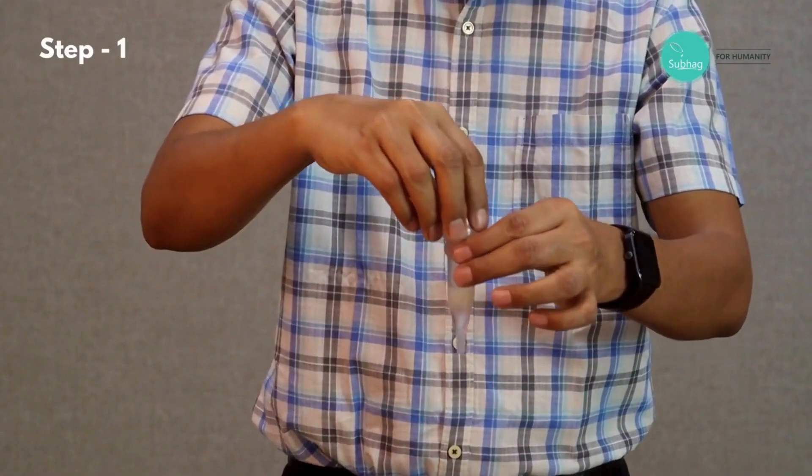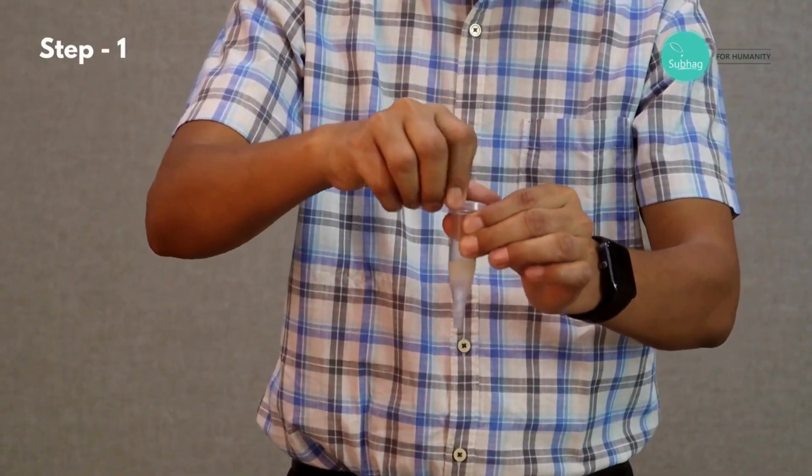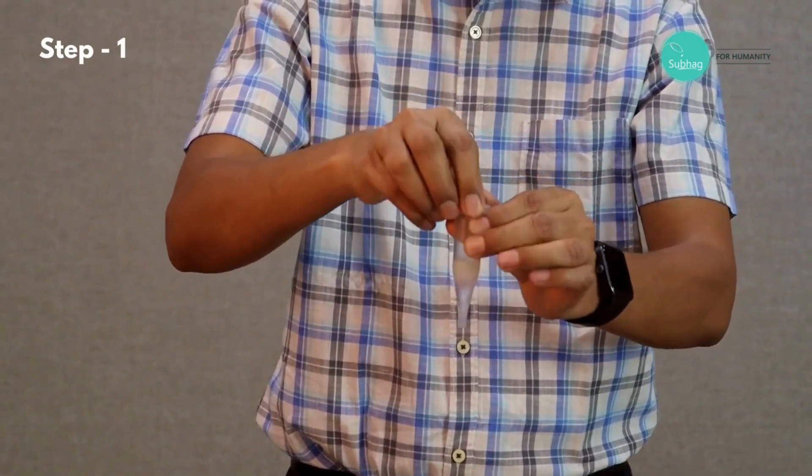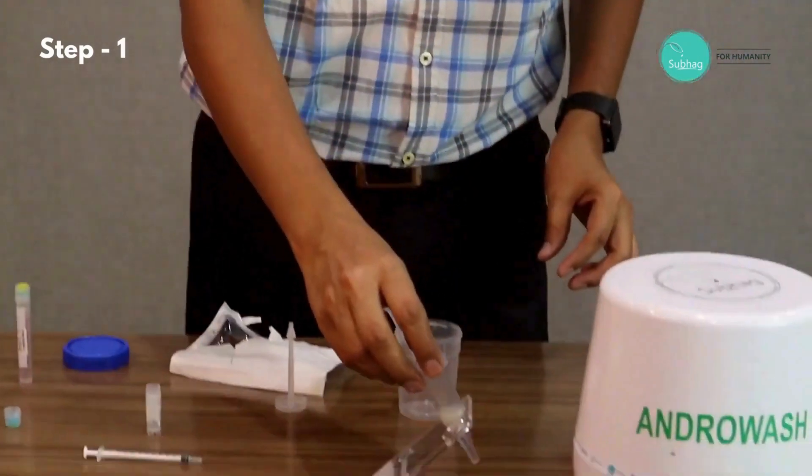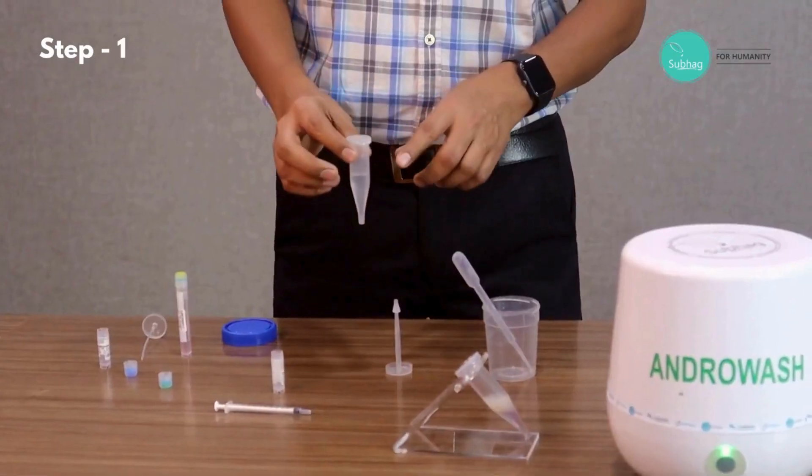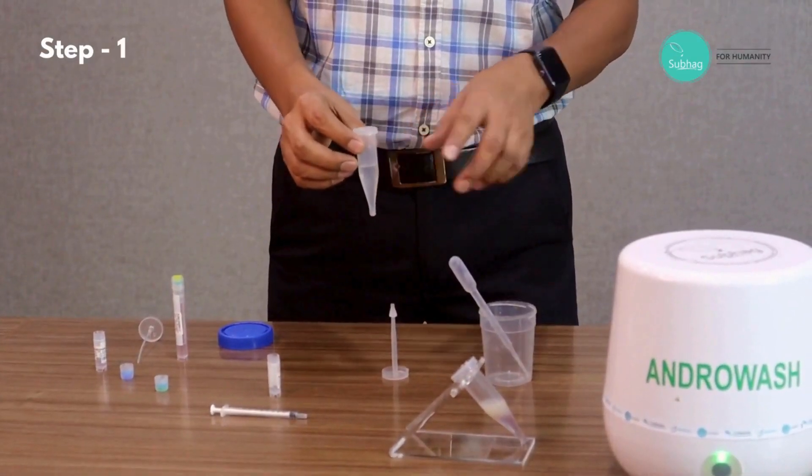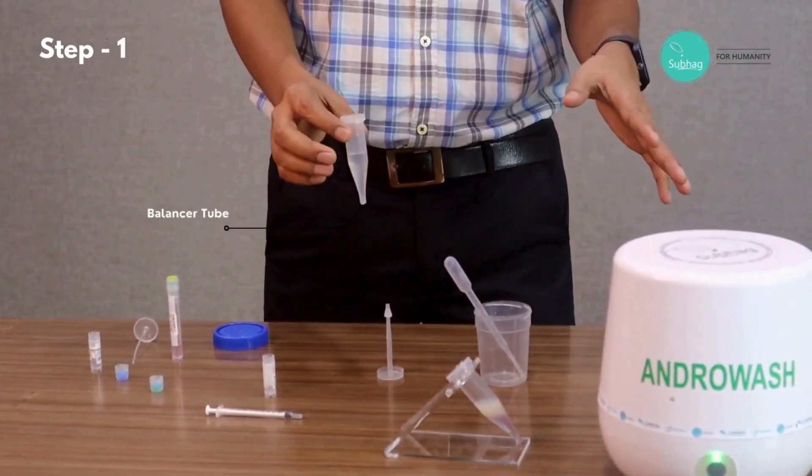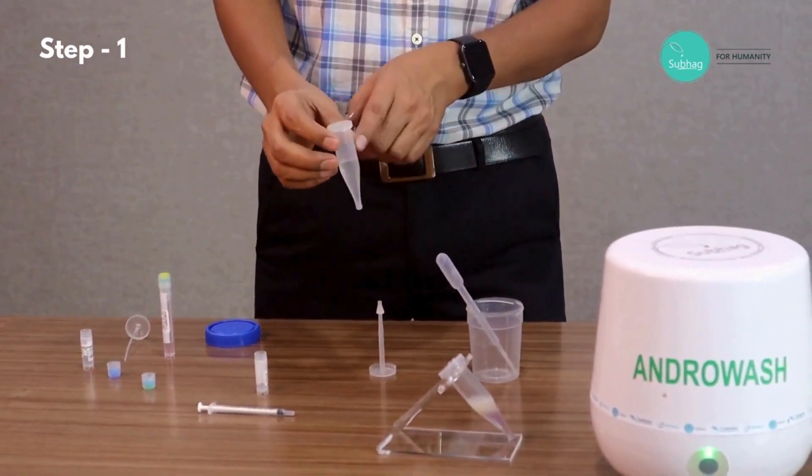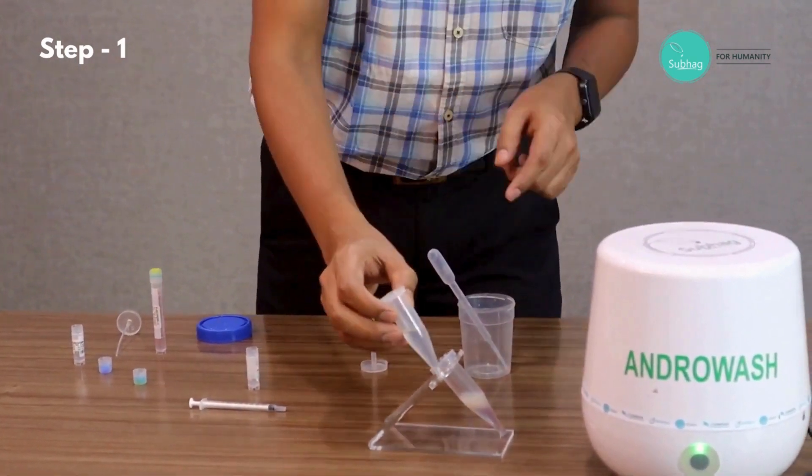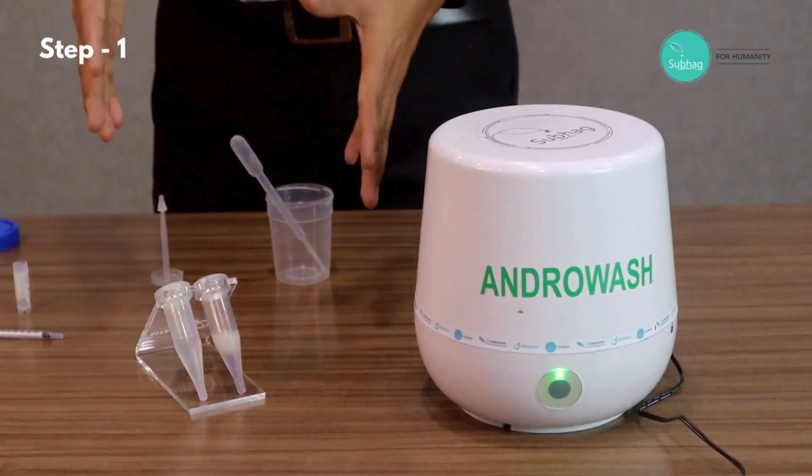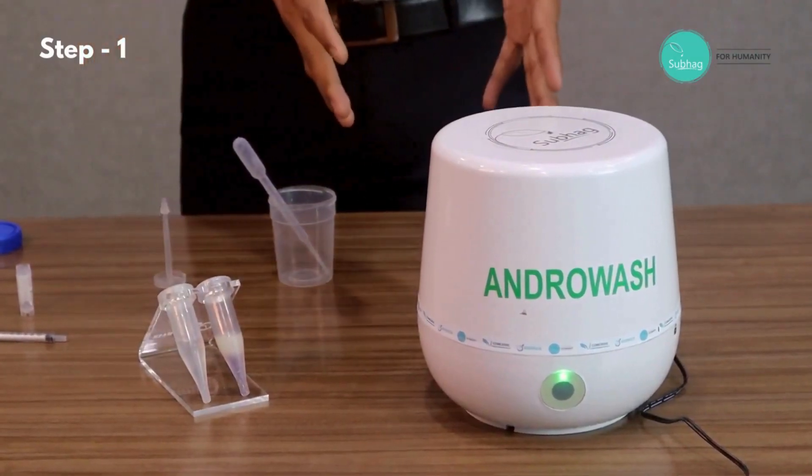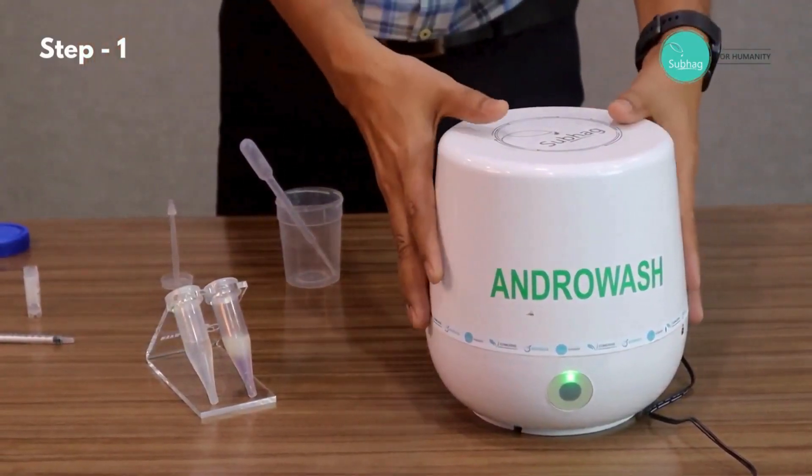Now we take cap two and put it like this, put it on the preparation channel. Now we take the balancer tube. As this is a one wash at a time, we need a balancer tube, so we take the water to the same level so that it's balanced. Now the preparation is done, now it's ready to load into the machine.